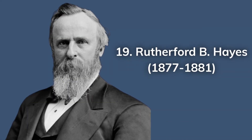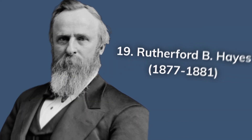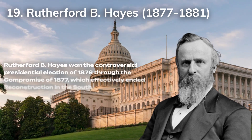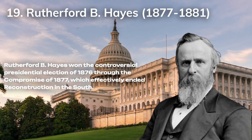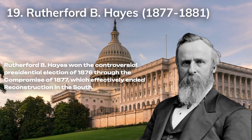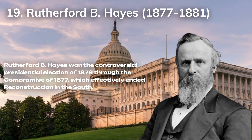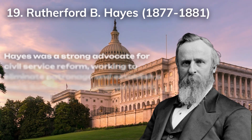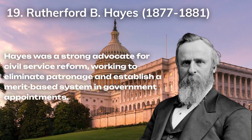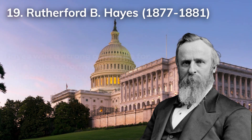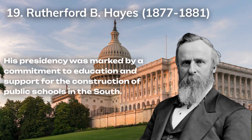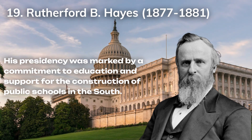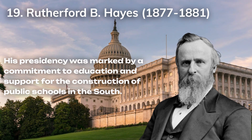The 19th president, Rutherford B. Hayes, won the controversial presidential election of 1876 through the Compromise of 1877, which effectively ended Reconstruction in the South. Hayes was a strong advocate for civil service reform, working to eliminate patronage and establish a merit-based system in government appointments. His presidency was also marked by a commitment to education and support for the construction of public schools in the South.